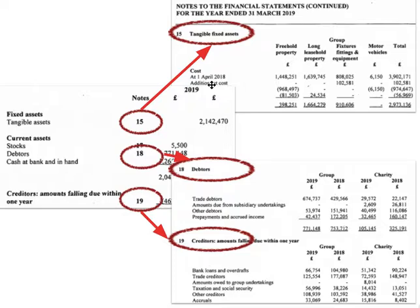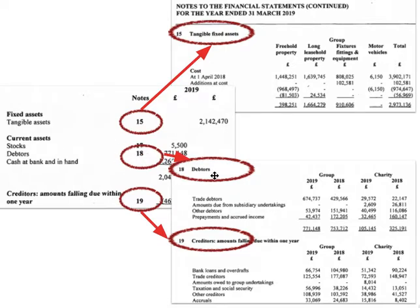The pages will look like this. In this case, note 15 refers to this section — notes to the financial statement, number 15: tangible fixed assets. We can see that this relates to that line as well. So the number 15, the term 'tangible fixed assets', fixed assets, tangible assets — all connects up. So if you want to read more about this note, that's where you go. And if you come across this note while browsing through a report, you can trace it back to the statement. That's how you find the notes.